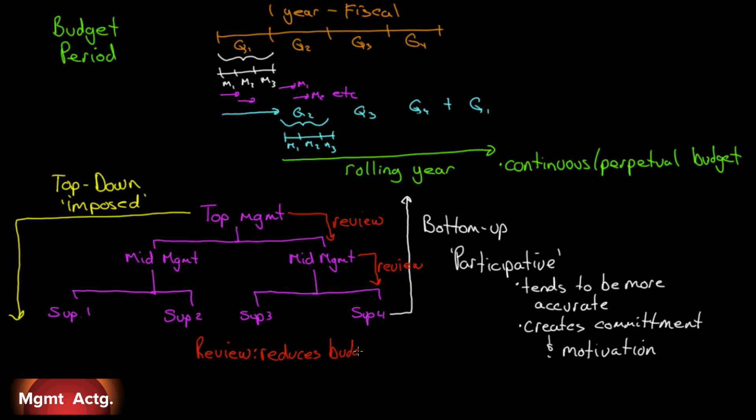The review process reduces something called budgetary slack. Budgetary slack is the ability of a lower-level manager to underestimate the revenue that they can generate or overestimate the expenses, so that I can always come in saying my sales were a lot higher than I thought or my expenses are a lot lower than I thought. Give me my bonus. That review process from the top down helps to eliminate that.